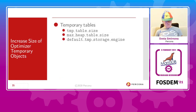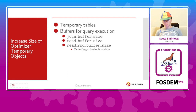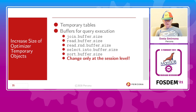For optimizer configuration, you may tune in-memory temporary tables and the default storage engine if the default doesn't work for you. Buffers for query execution can also be tuned, but change them only at the session level — they are allocated for every query, and if you change them globally with many connections, you can trigger out-of-memory errors on your server.